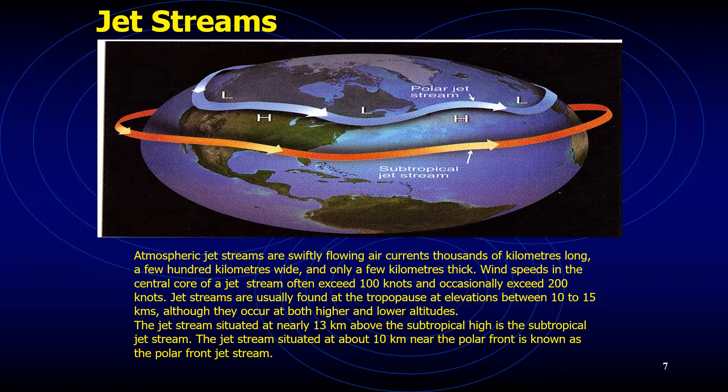What else contributes to the formation of a mid-latitude cyclone? We have the concept of jet streams. The necessary ingredients for developing mid-latitude cyclones include the role of the jet stream and upper air support. In order for the mid-latitude cyclone to develop and intensify, there must be upper-level divergence above the surface storm.